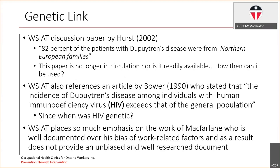The current paper by Hearst, written in 2002, stated that 82% of patients with Dupuytren's disease were from Northern European families — which we've just shown is false. It also references an article by Bauer in 1990, who states that the incidence of Dupuytren's disease amongst individuals with HIV exceeds that of the general population. The question is: when was HIV a genetic disorder? So WSIAT places so much emphasis on the work of McFarlane, who is well documented for his bias against work-related factors, and does not provide an unbiased, well-researched document for determining compensation claims.